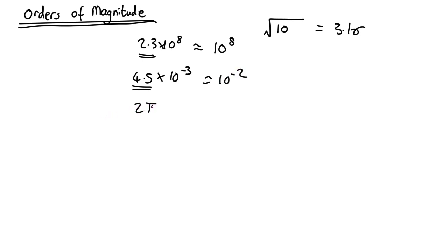And 2 pi, well, pi is about 3, 2 pi is about 6, so that would round up. So that's about 10, which is 10 to the 1.